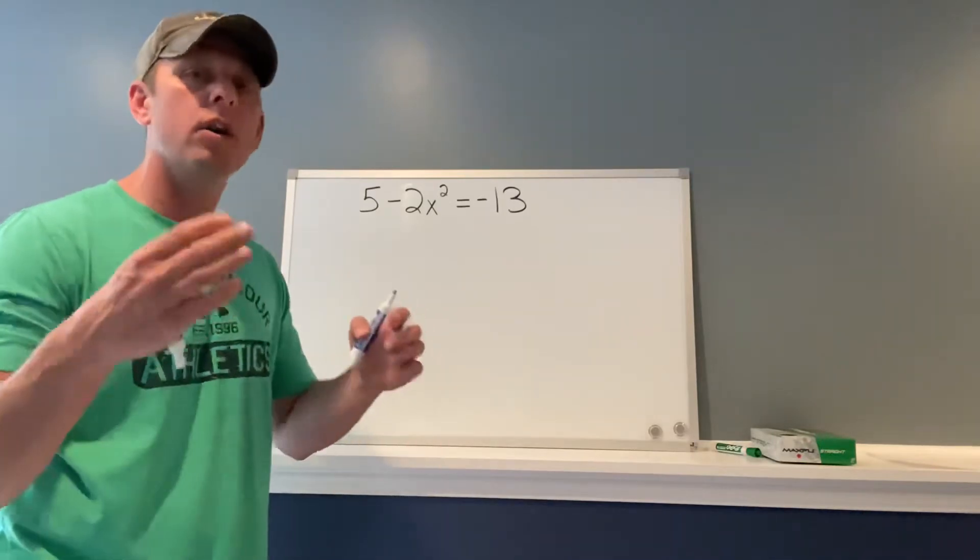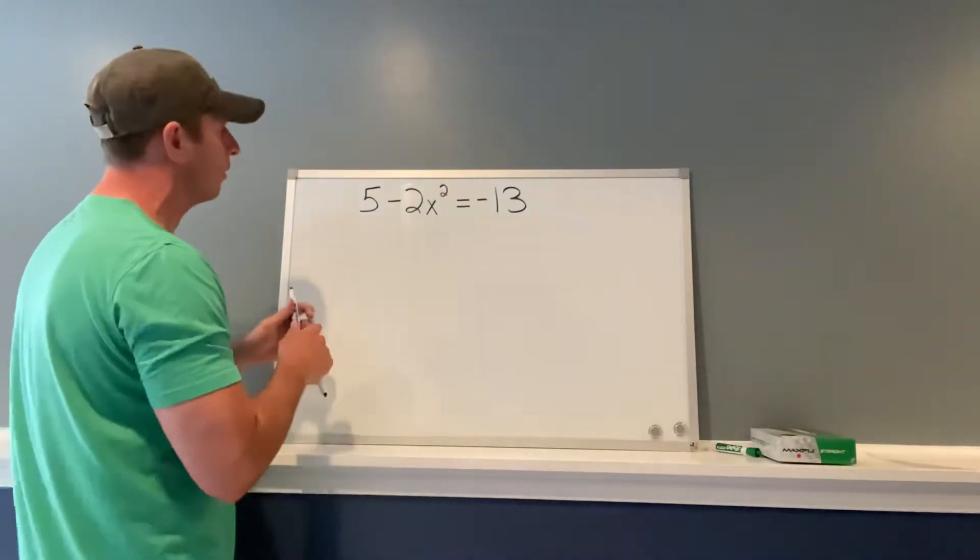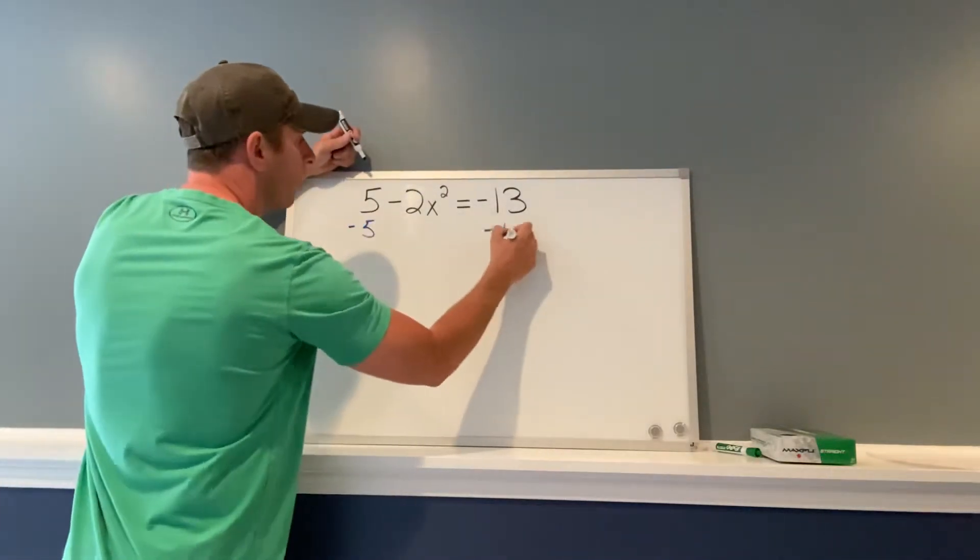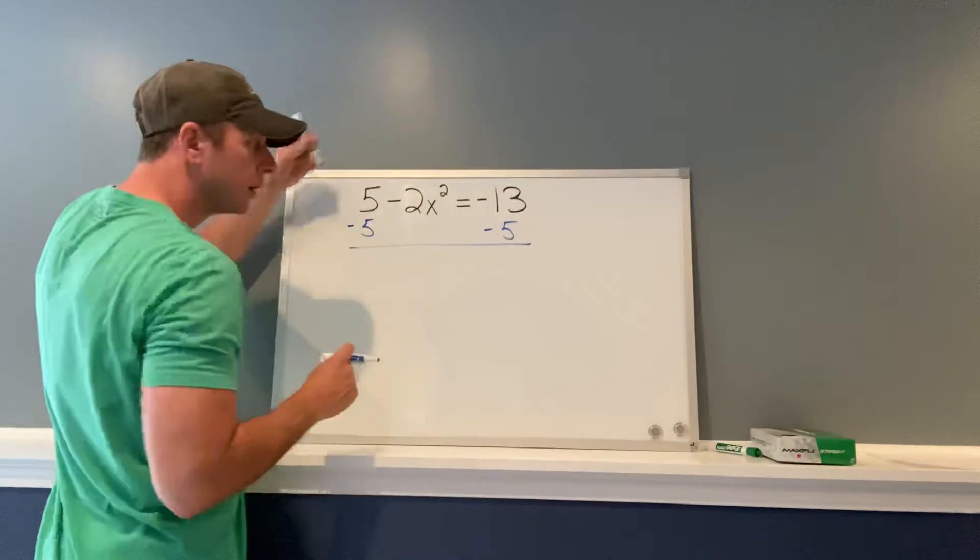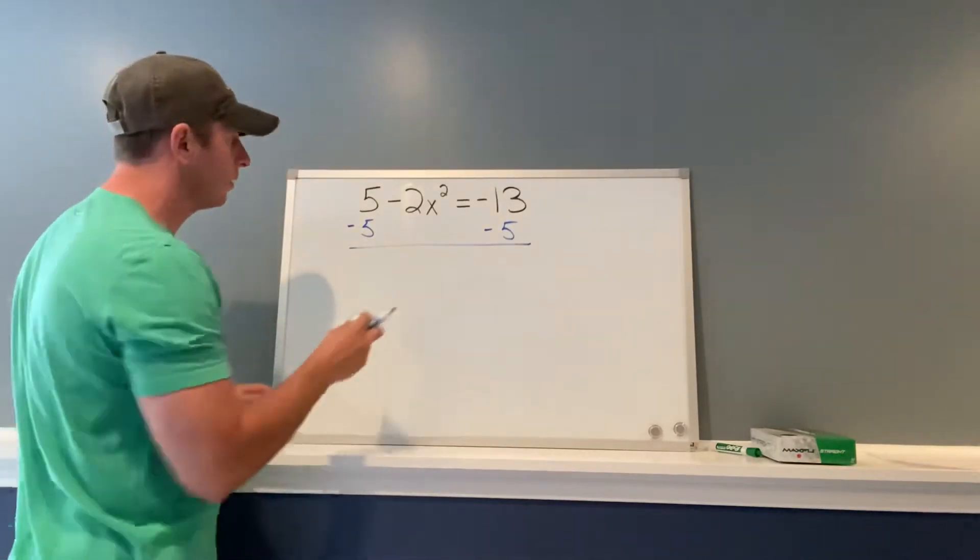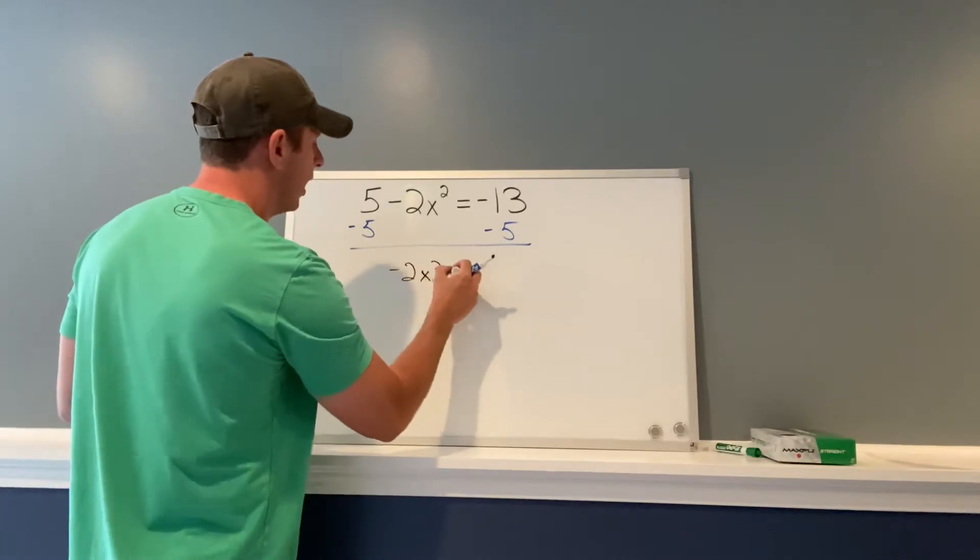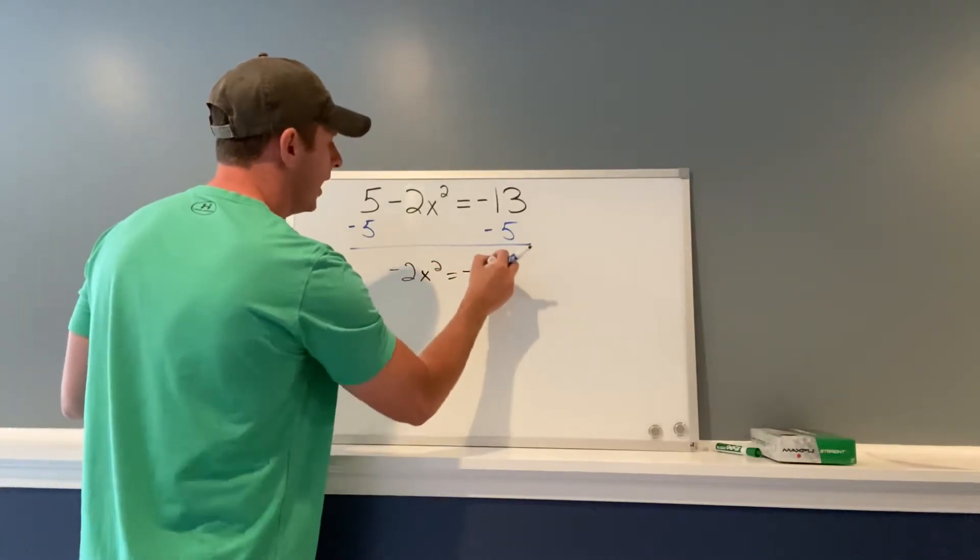So again, we're going to undo order of operations. The first thing we're going to do is add or subtract something to the other side. We're going to subtract 5 from both sides. After we subtract 5 from both sides, we've got -2x² = -18.